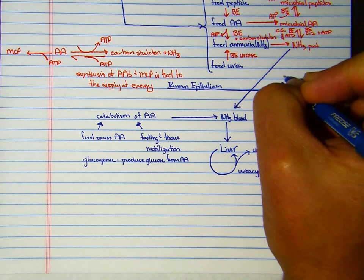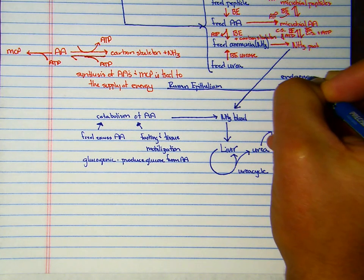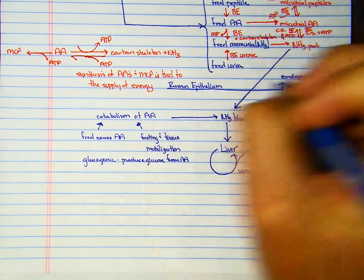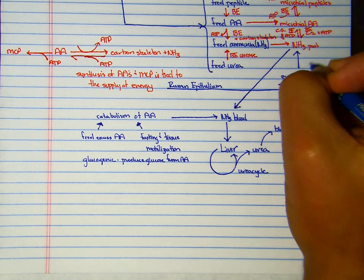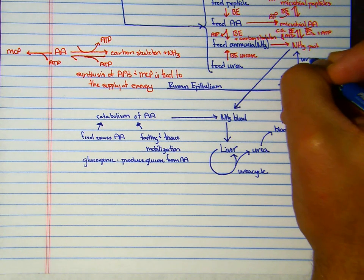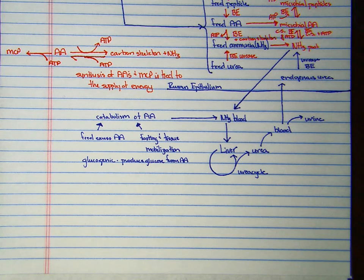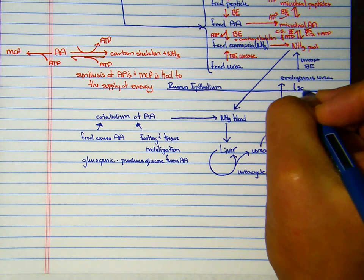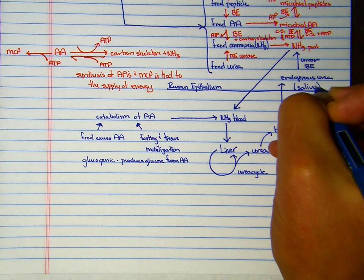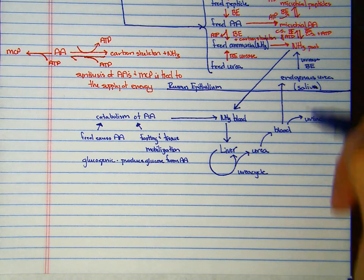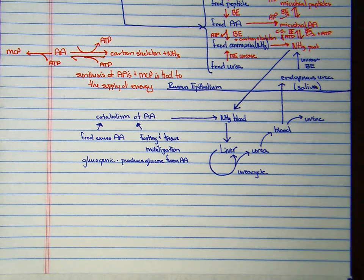The urea that enters the rumen can be used as endogenous urea. That endogenous urea can be hydrolyzed to ammonia by urease, again of microbial origin. Another place you can find urea is in the saliva. If animals chew their cud more, they will secrete more urea in saliva, and more urea will go to the rumen. That can be a source of ammonia for microbial crude protein synthesis.